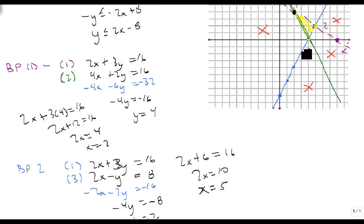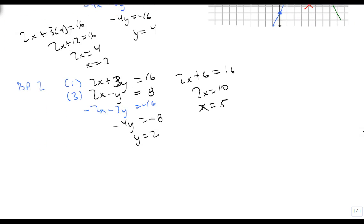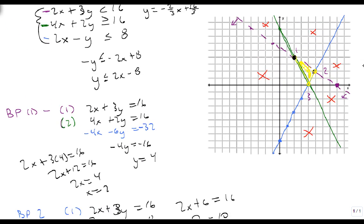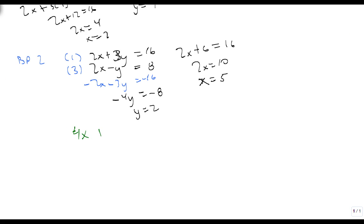And our third one is the green line and the blue line, which happens at, let's see, the green line was 4x plus 2y equals 16. And the blue line was 2x minus y equals 8.